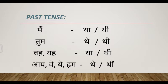Next, second person — tum ka means if you use 'tum' in past tense: the helping verb is 'the' for masculine, 'thi' for feminine. Example: tum school mein the — you were in school. Suppose a girl: tum baag mein thi — you were in the garden.